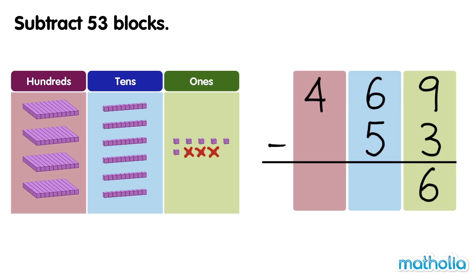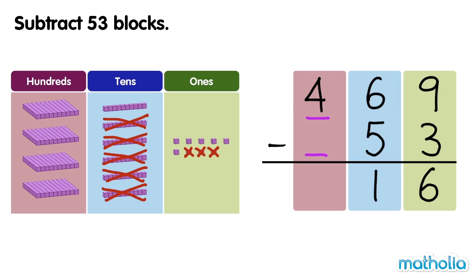Next, subtract the tens. 6 tens minus 5 tens equals 1 ten. Now we subtract the hundreds. 4 hundreds minus 0 hundreds equals 4 hundreds. There are 416 blocks left. 469 minus 53 equals 416.